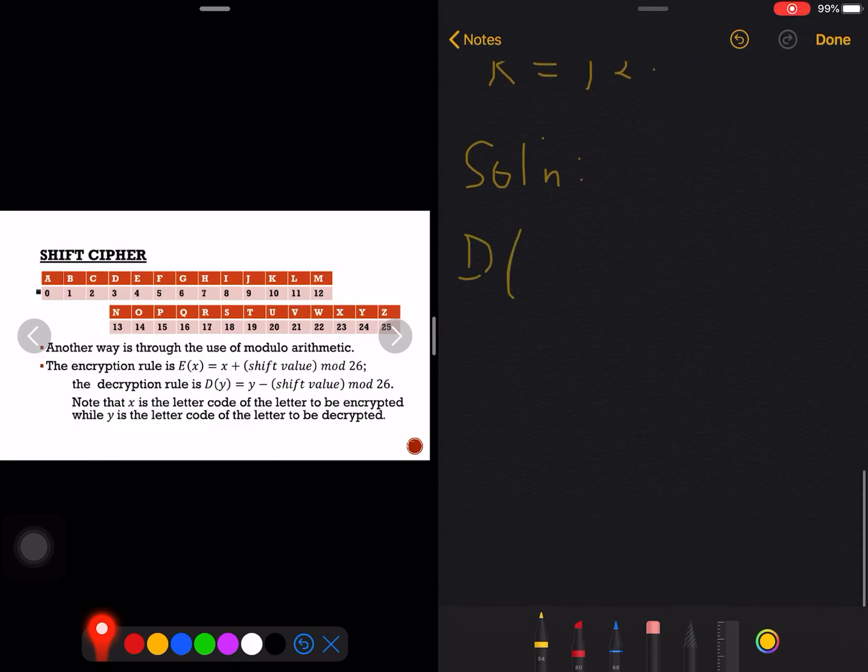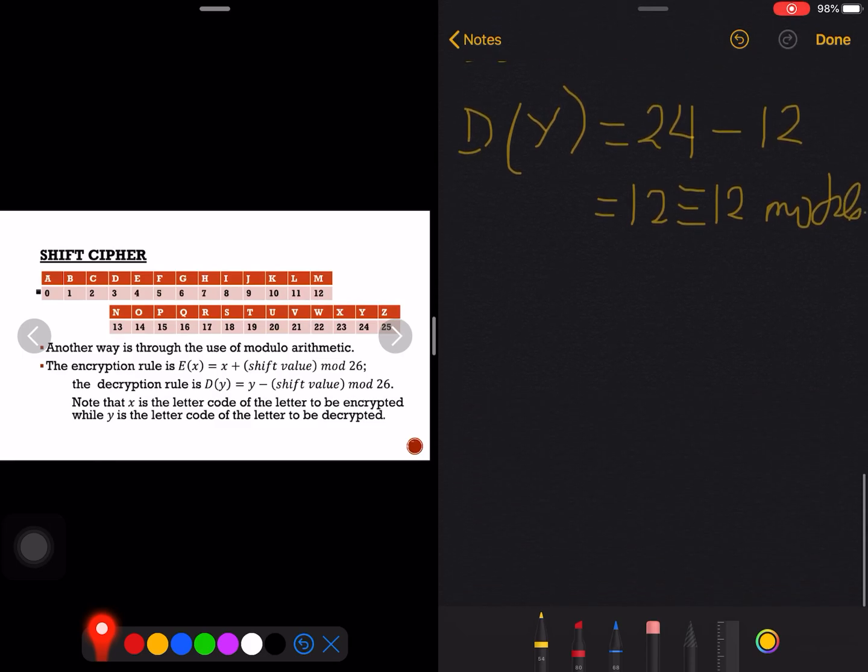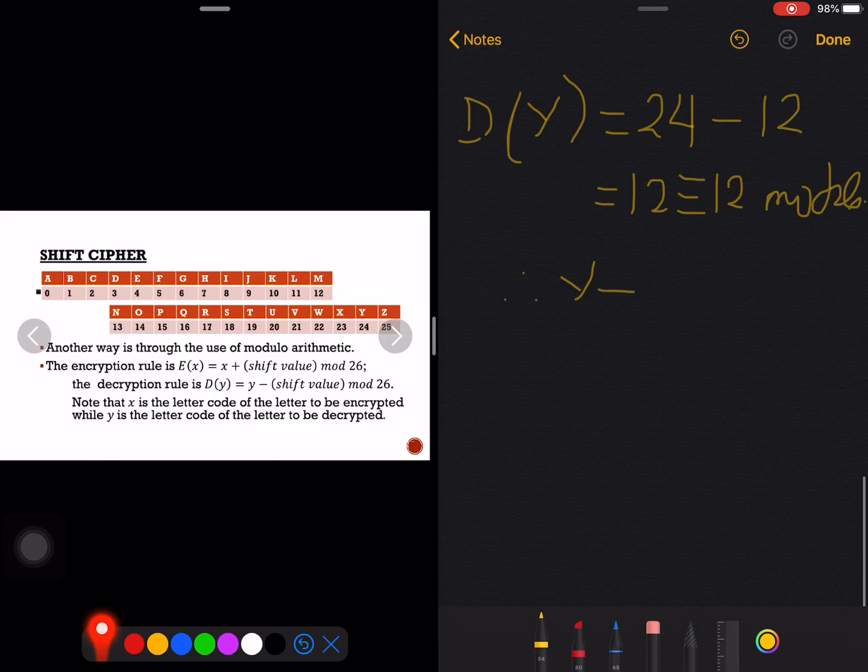Let's check if we can retrieve the word MATH using the algorithm here or the decryption rule. We are to decrypt letter Y. In our decryption rule here it says that we need to get the letter code of this letter here and just have to subtract the shift key. The letter code of Y is 24, so this is 24 to be subtracted by the shift value which is 12, and that is 12. 12 is still congruent to 12 mod 26. Therefore Y is actually letter M.